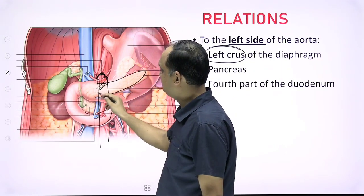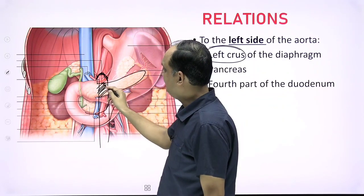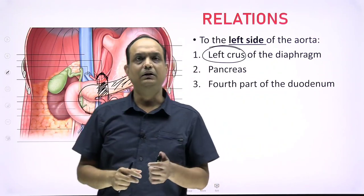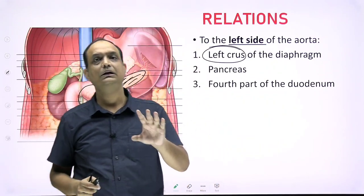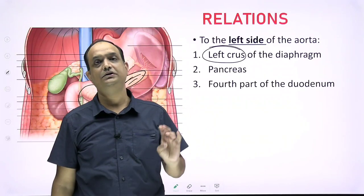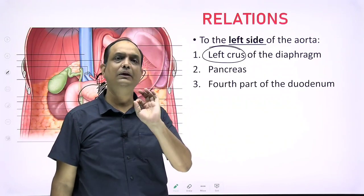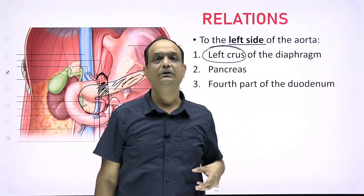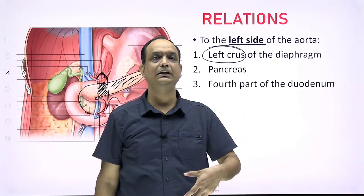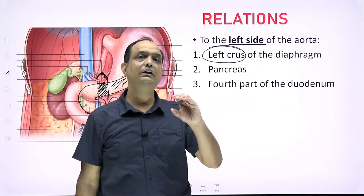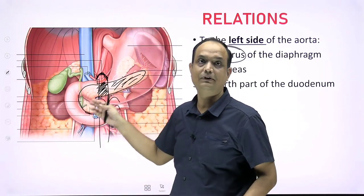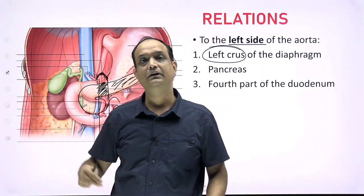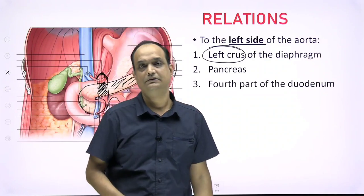In summary, for the relations of the abdominal aorta: the pancreas is related anteriorly and on the left; the duodenum is related anteriorly and on the left; for diaphragmatic relations, the right crus is on the right and the left crus is on the left; and posteriorly you have the lumbar veins and the vertebral column.